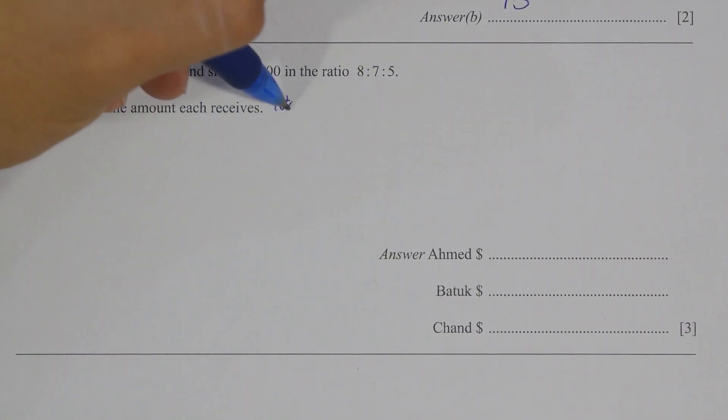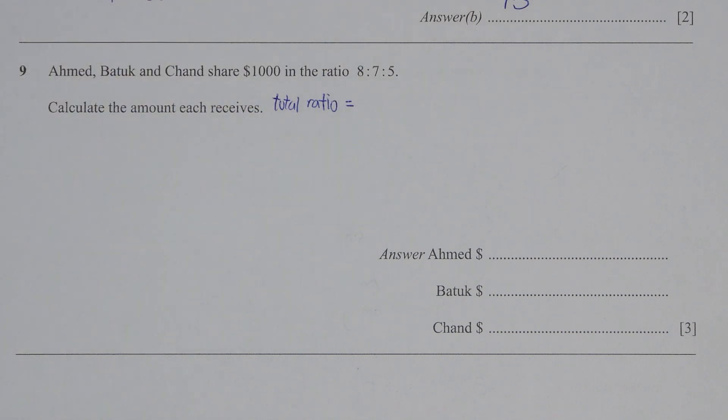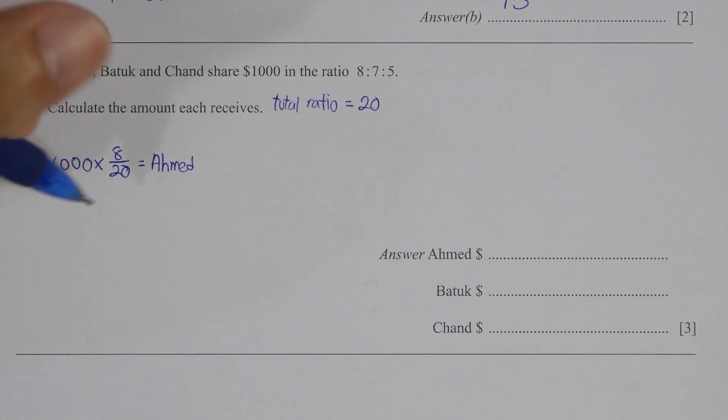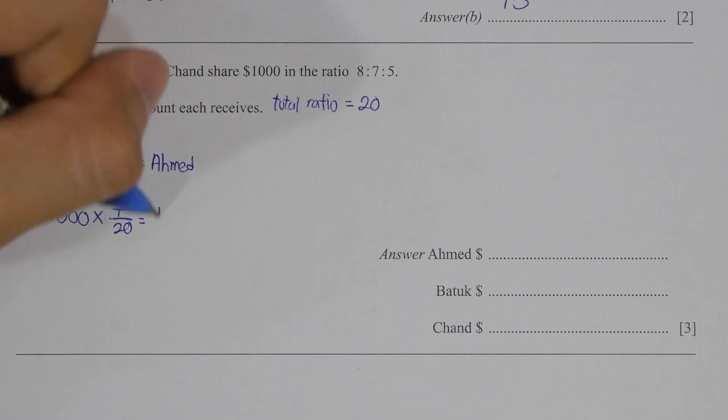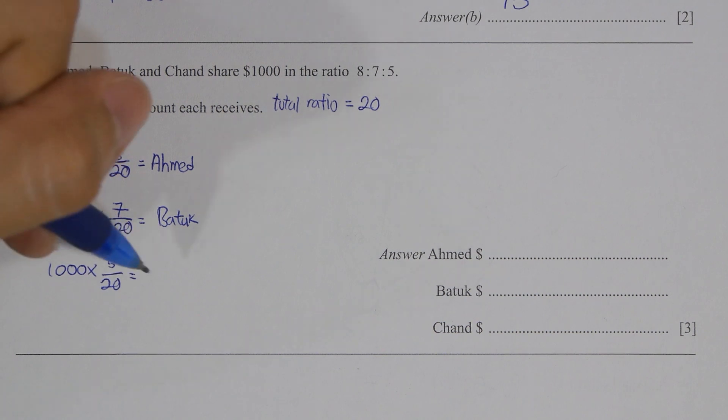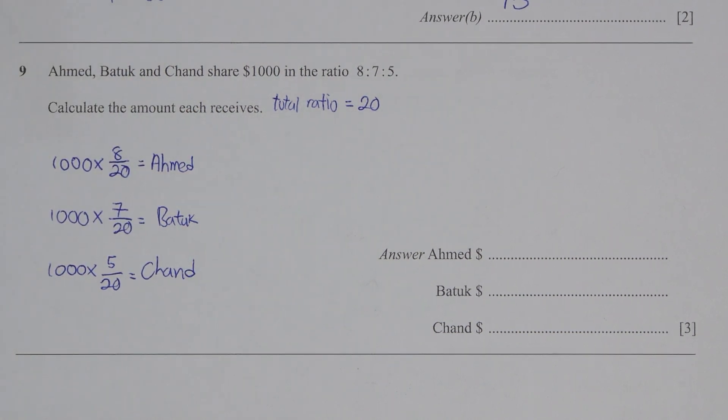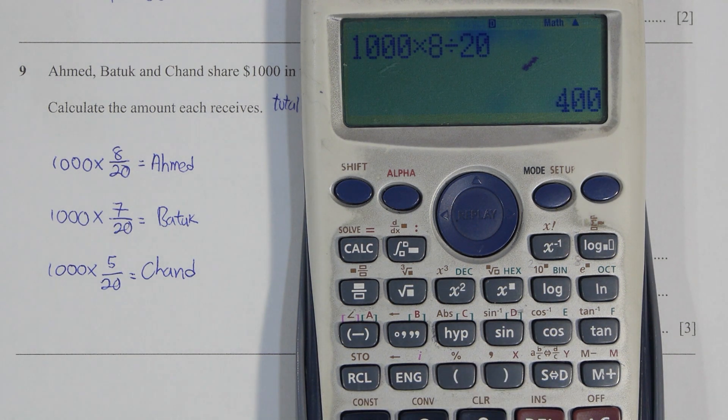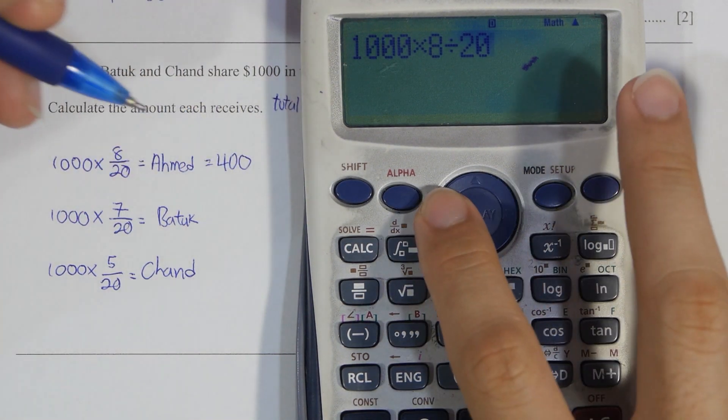Question nine pretty straightforward. Find the total ratio and multiply 1000 by the respective ratio. Ahmed is actually 1000 times 8 over 20, vice versa. Just repeat the steps for Patok and Chan.